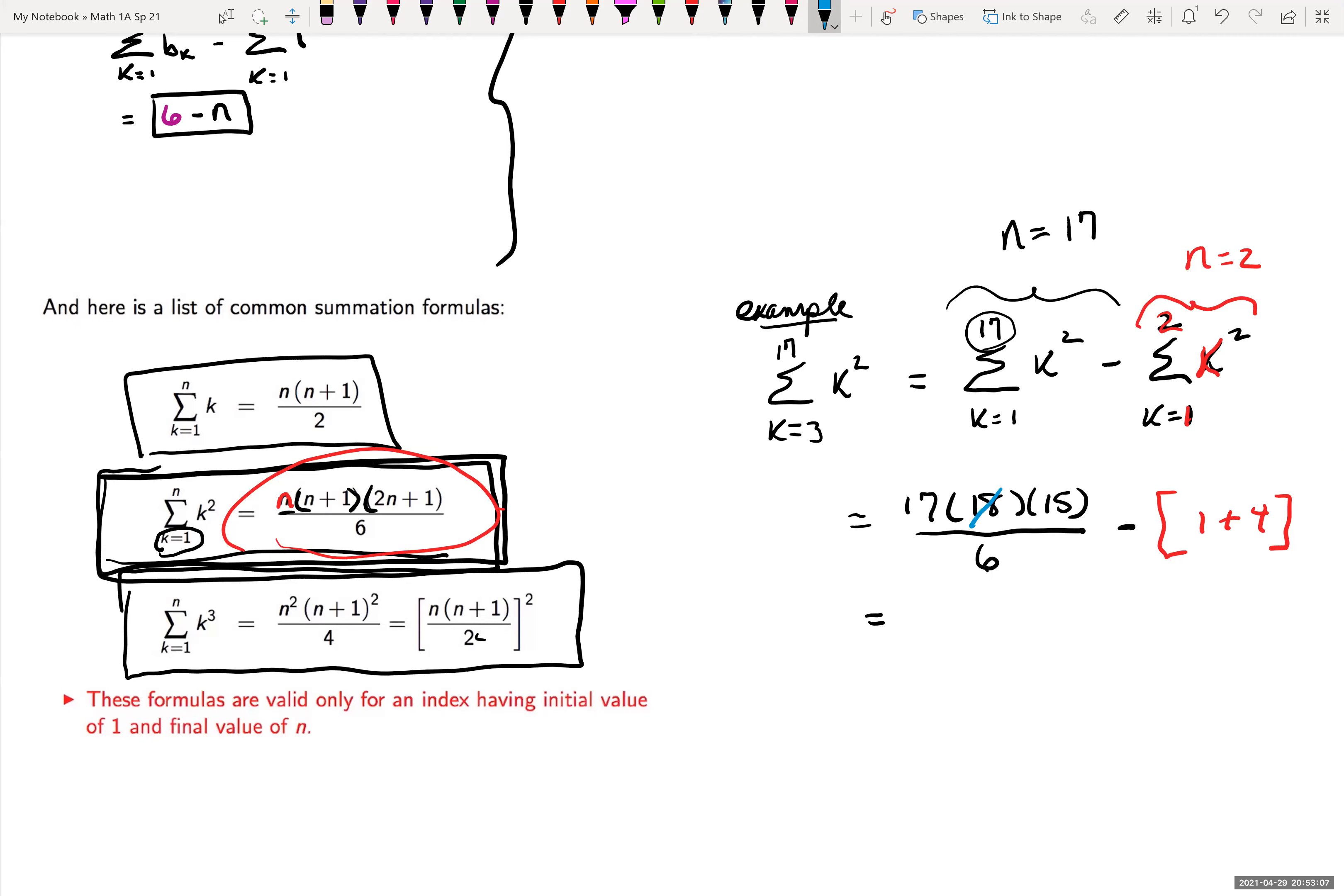Which is equal to 1785 minus the quantity which we said was five. So this would be 1780. So we were able to manipulate it. We needed that our initial value was starting at one. So we were able to manipulate it when it didn't start out as one by using subtraction of the terms we didn't want in there.